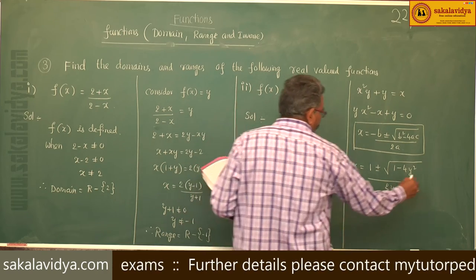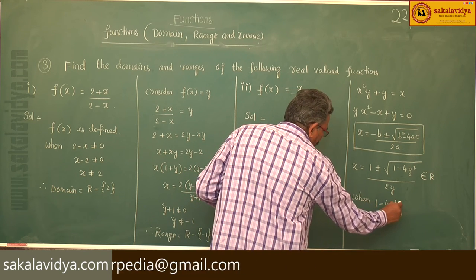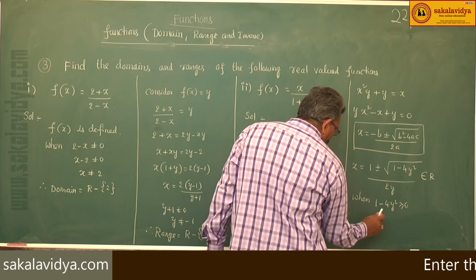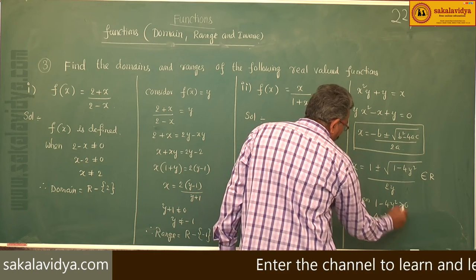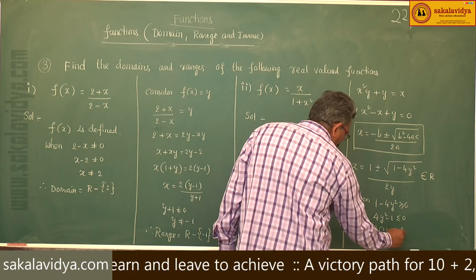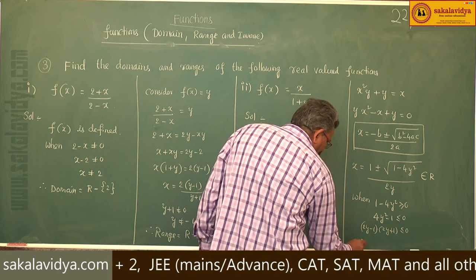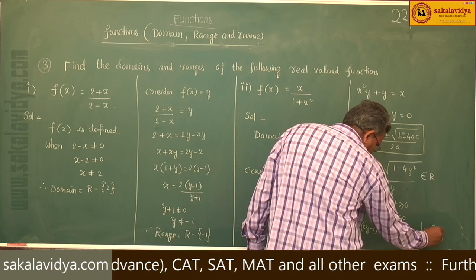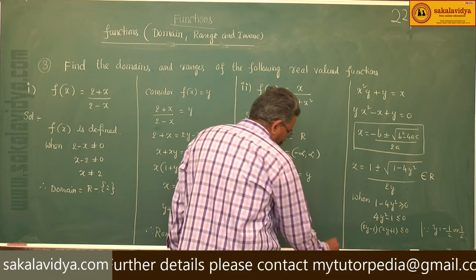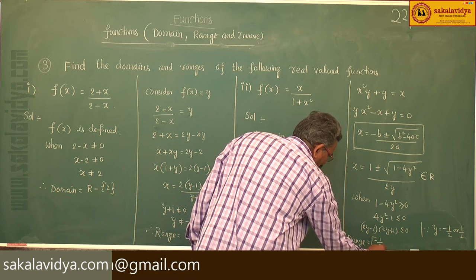So it belongs to R when 1 minus 4y squared is greater than or equal to 0. This means 4y squared minus 1 is less than or equal to 0, which is (2y minus 1)(2y plus 1) less than or equal to 0. Equating to 0 gives y equals minus half or 1 by 2. So y lies between minus half and half. Therefore, range is equal to the closed interval [−1/2, 1/2].